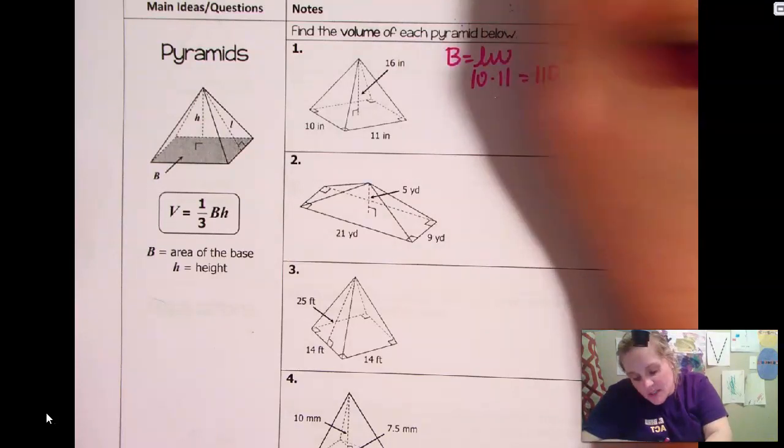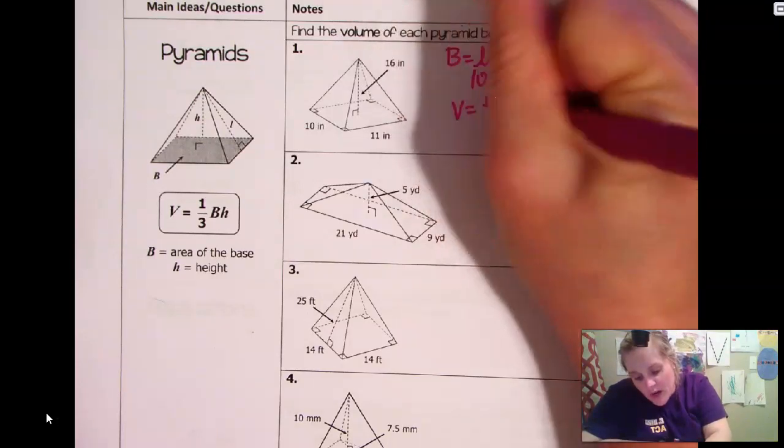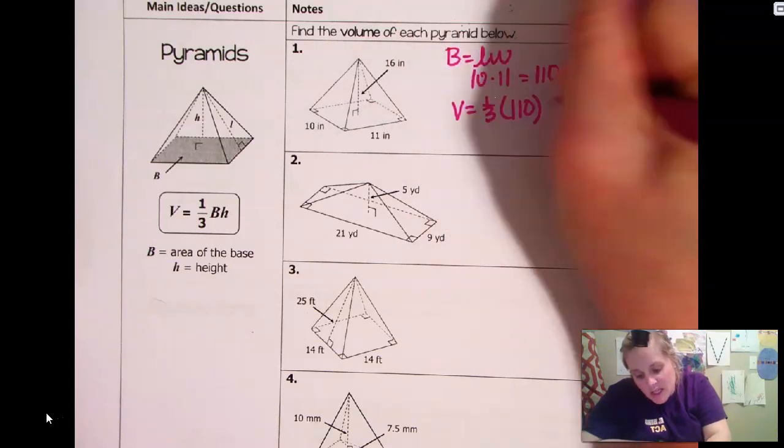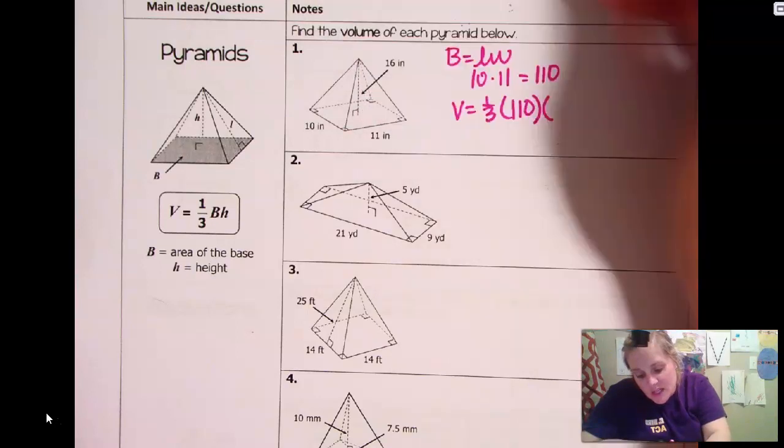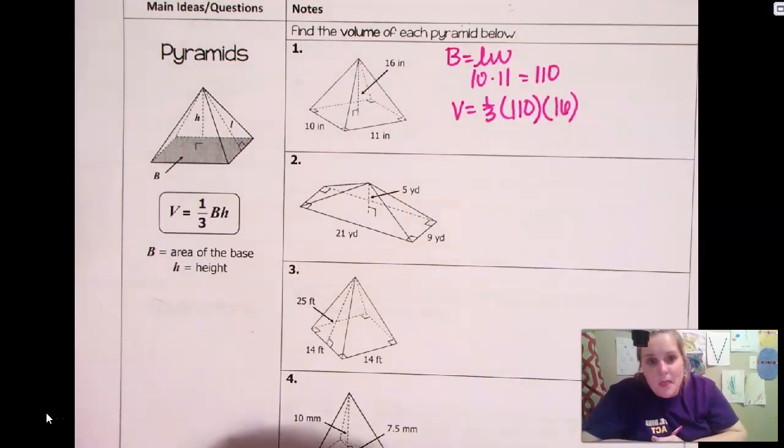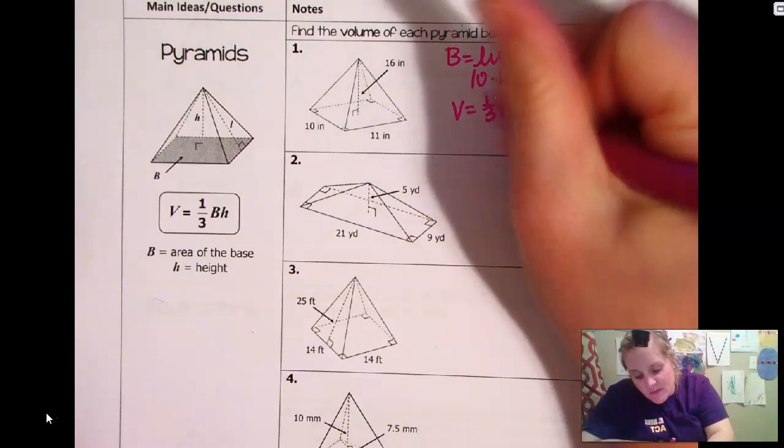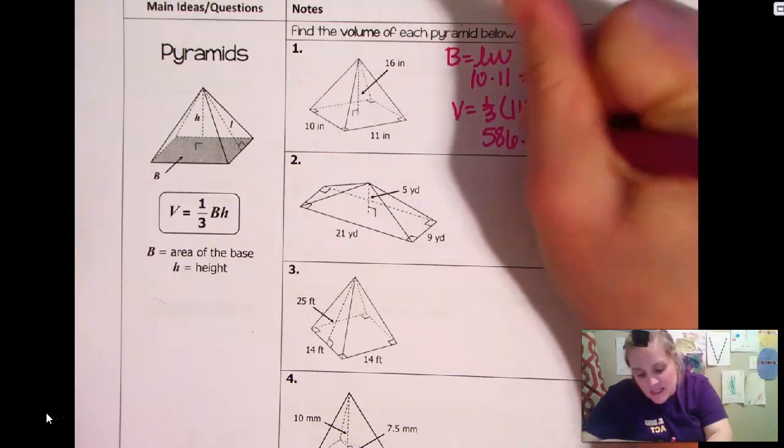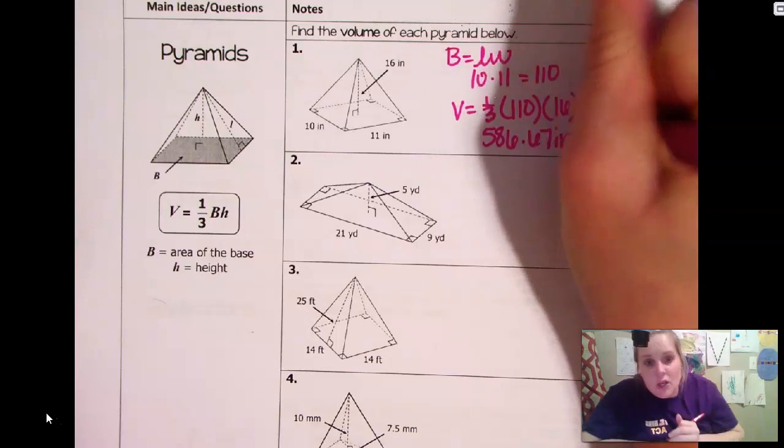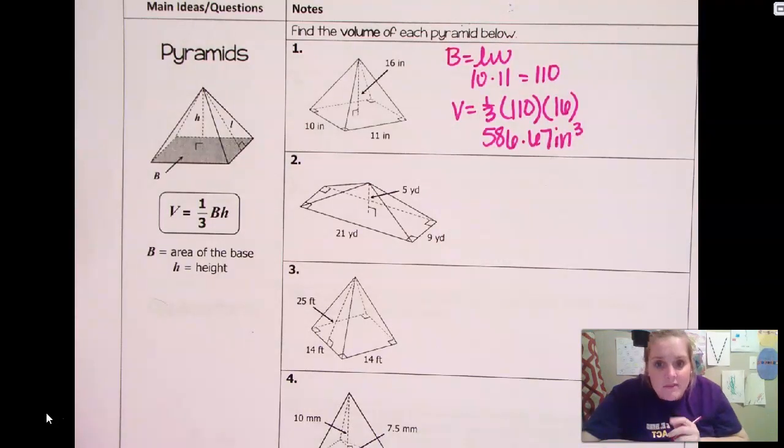Then I'm just going to say the area is one third big B, which is 110. The height runs from the center to that vertex. So that is 16. We plug that in our calculator. That's 586.67 inches cubed. That is how you find the volume of a pyramid.